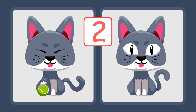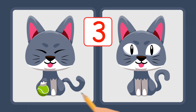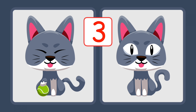The second difference is that the cat on the left has a tennis ball, and the cat on the right does not. Let's take a closer look. What else is different? The tails are pointing in different directions.